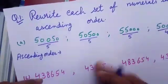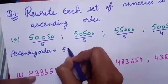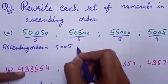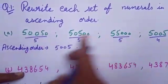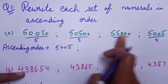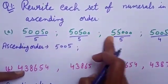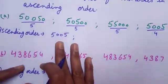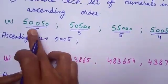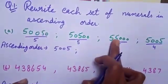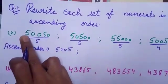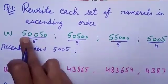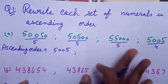So firstly, I will write the 4-digit numeral. Then I want to compare the remaining 3 numerals. Firstly, I will compare the digit which is at the 10,000 place, because all these 3 numerals are of 5 digits. There are 5s at the 10,000 place, so I can't compare it.